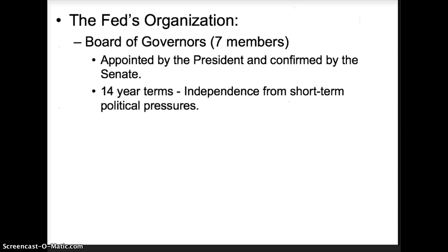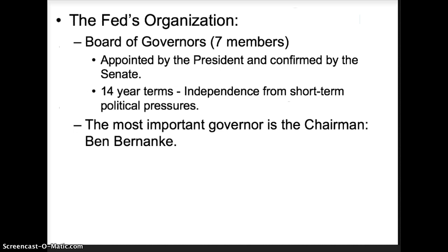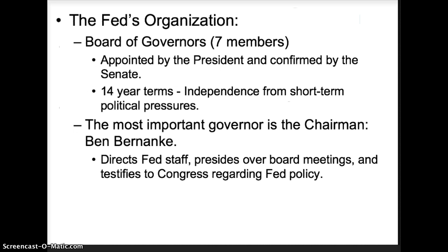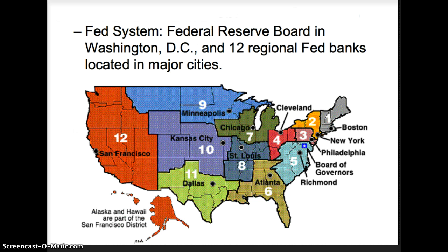The most important governor is the Chairman, who is currently Ben Bernanke. The Chairman is responsible for directing Federal Reserve staff, presiding over board meetings, and testifying to Congress about Fed policy. The Federal Reserve system includes the Board of Governors in Washington D.C., and 12 regional Fed banks located in major cities. I'm including a map because it's interesting to see where each regional bank is located.